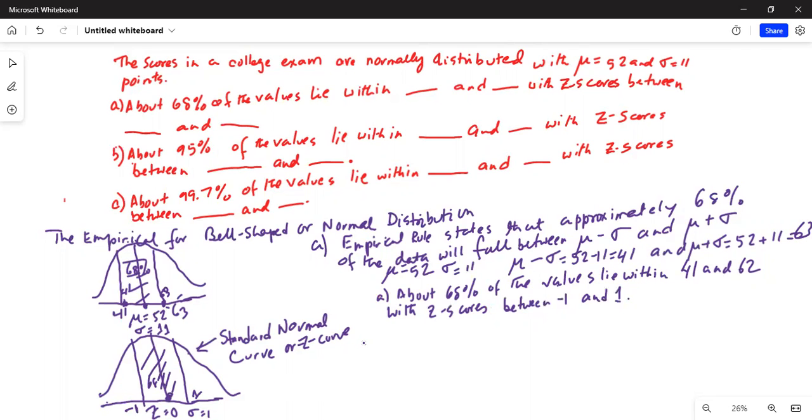Now let's do part B. Mu minus 2 sigma and mu plus 2 sigma. So mu is 52 minus 2 times 11, and this one is mu is 52 plus 2 times 11. 52 minus 22 and this is 52 plus 22. So this is 30 and this is 52 plus 22 is 74.